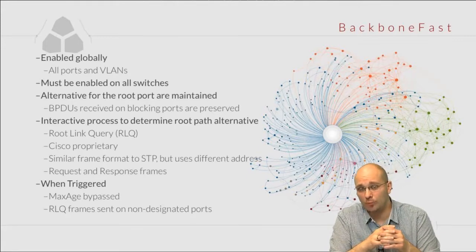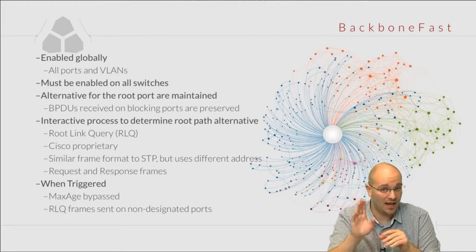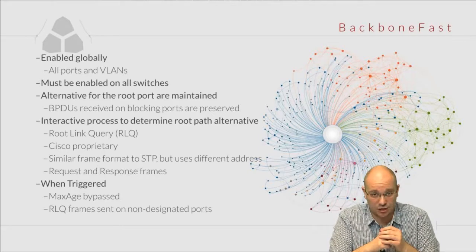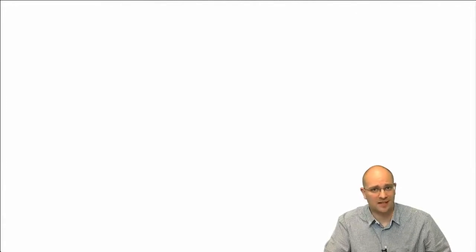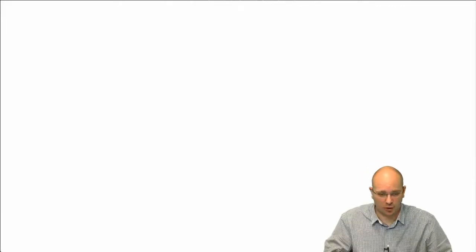There are two components of the Root Link Query: the request message and the response message. Before jumping into the terminal to show BPDU frames and their headers, let's take a look at an example in which Backbone Fast can be of use and speed up convergence in our network.